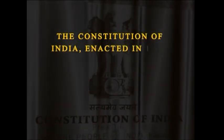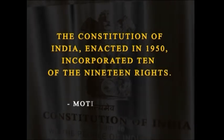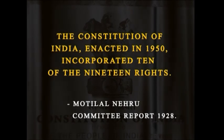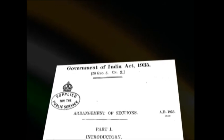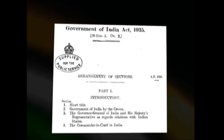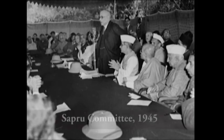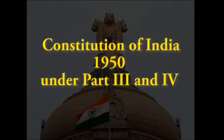The Constitution of India, enacted in 1950, incorporated 10 of the 19 rights enumerated in the Motilal Nehru Committee Report of 1928. When the Government of India Act, 1935, was being drafted, it was proposed that fundamental rights be added to the Constitution, but it was passed without any Bill of Rights. The Sapru Committee in 1945 stressed the need for a written charter of rights. Consequently, the Constituent Assembly included human rights in the Constitution, and fundamental rights along with directive principles of state policy were enshrined under Parts 3 and 4 of the Constitution of India, 1950.